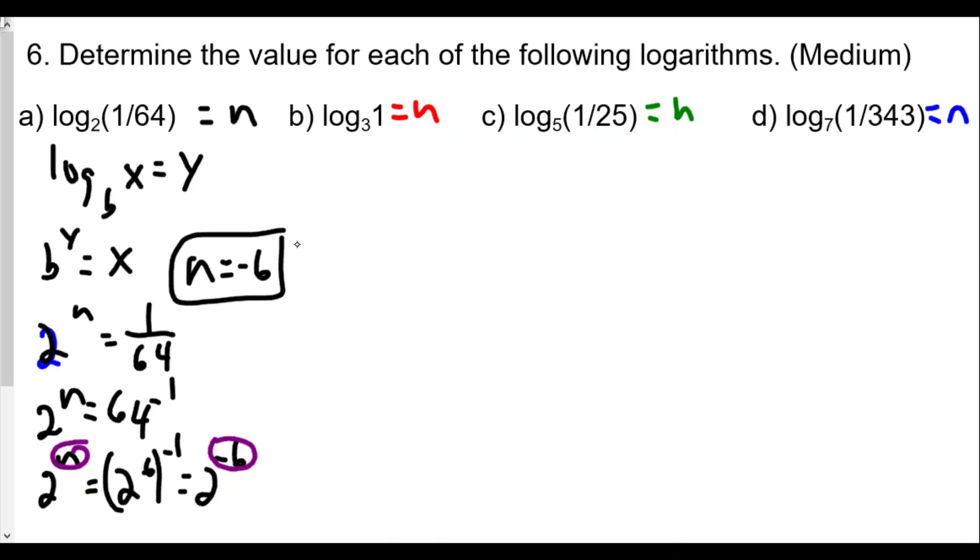We do the same thing for b. The base is 3, our exponent is n, so it's 3 to the n power equals 1. Now here's the funny thing though. Any number raised to the zero power, except for zero, is equal to 1. So that's one of these. That's why it's a little more tricky, it's more of remembering our rules for solving exponential equations.